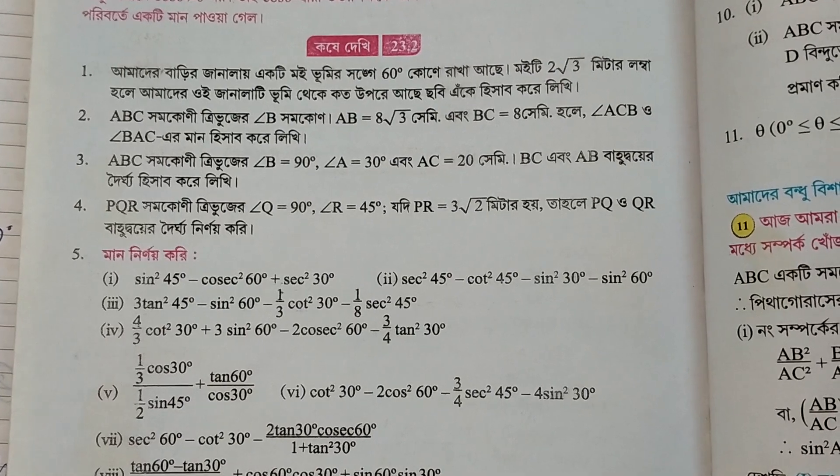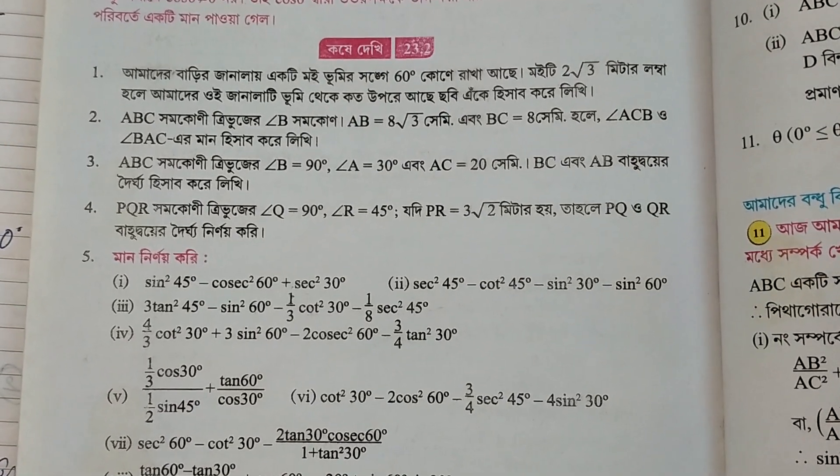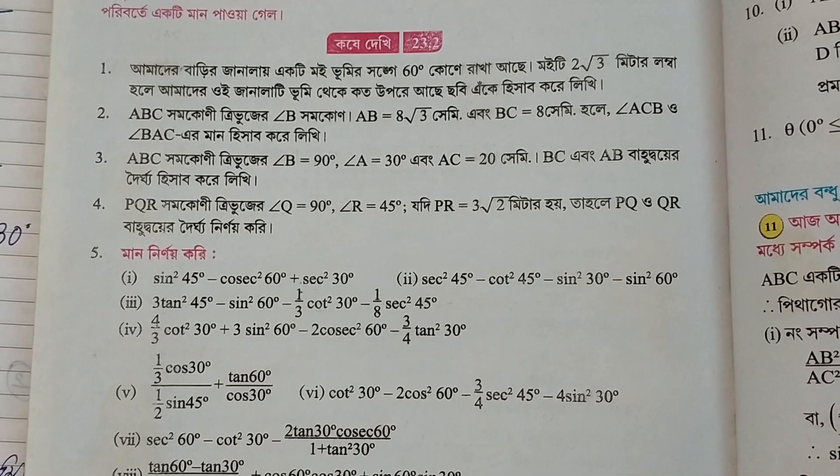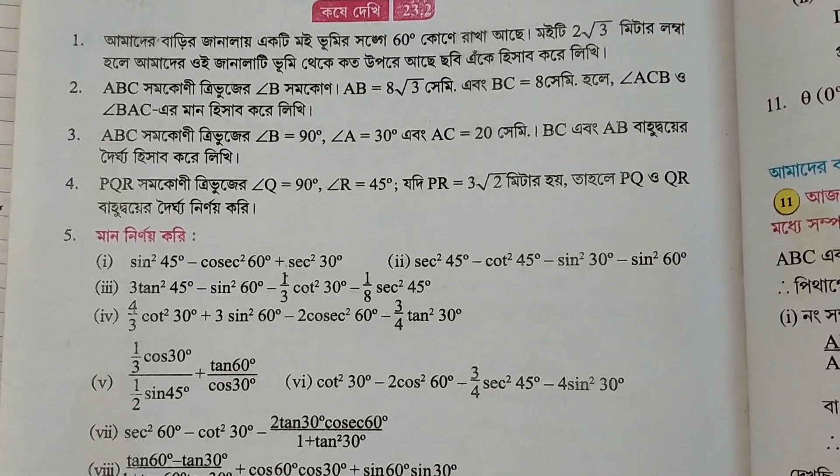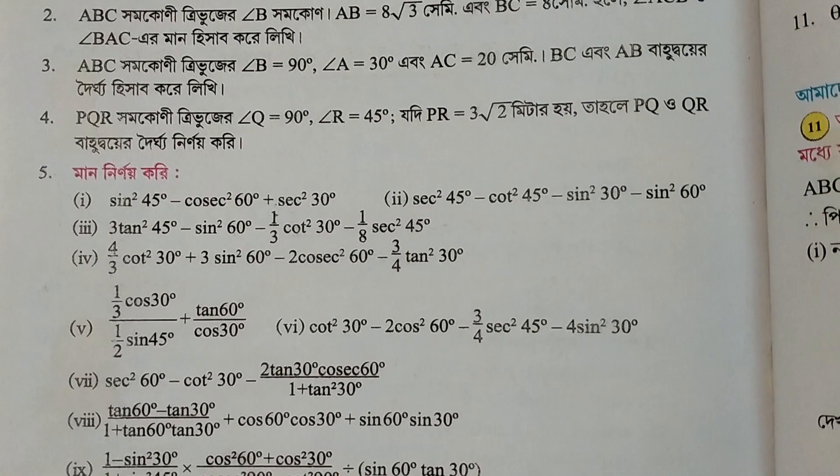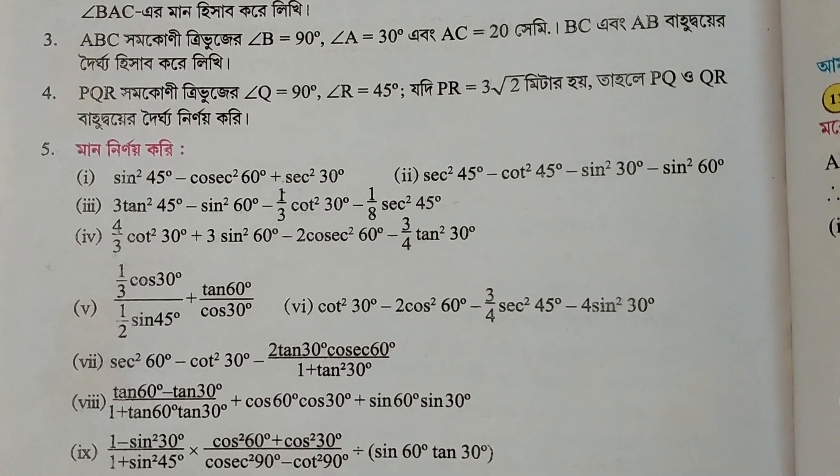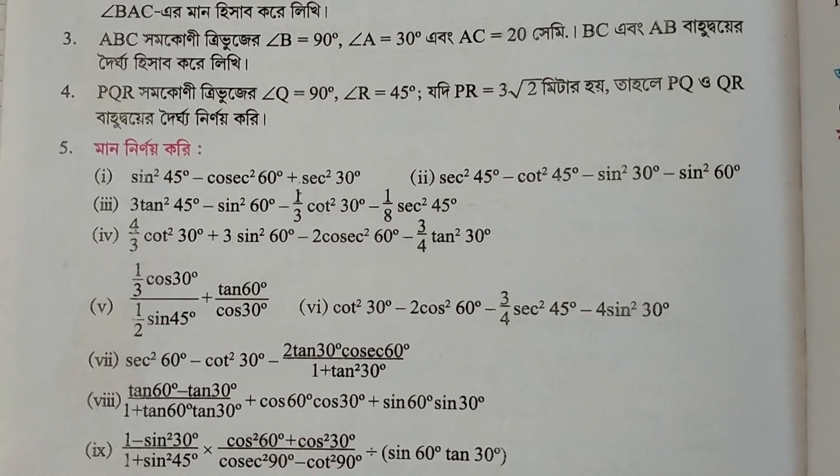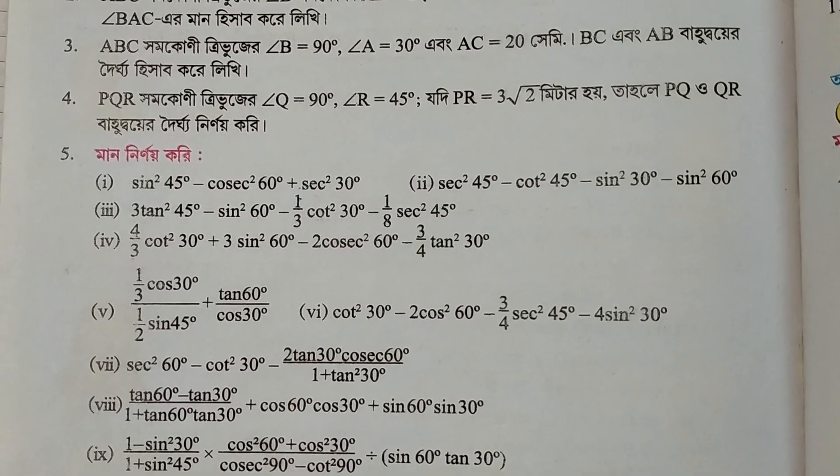Today we have questions about problem 23.2.8 involving triangle PQR. How many Q is 90? How many R is 45? The PQR is 3.8.